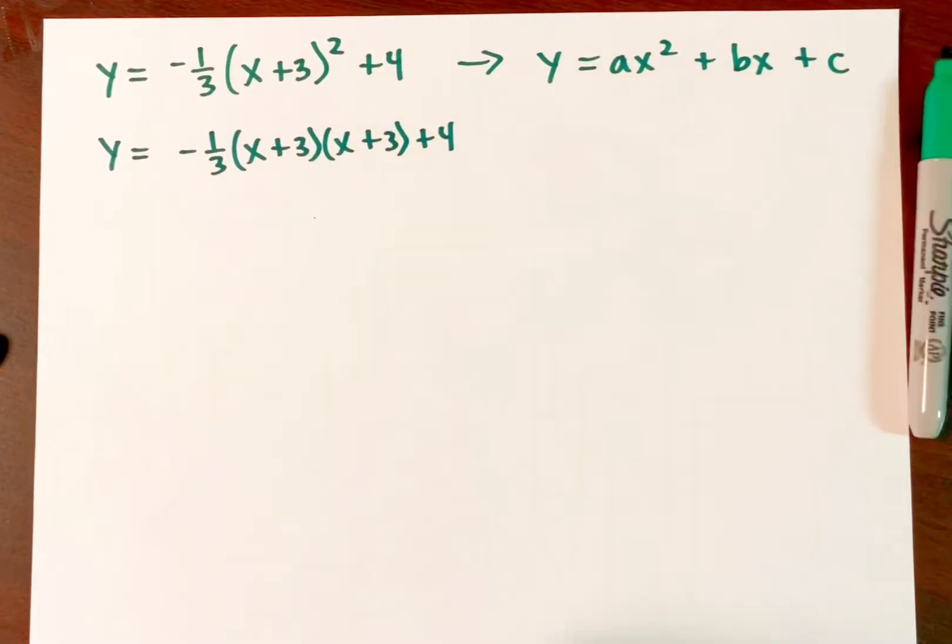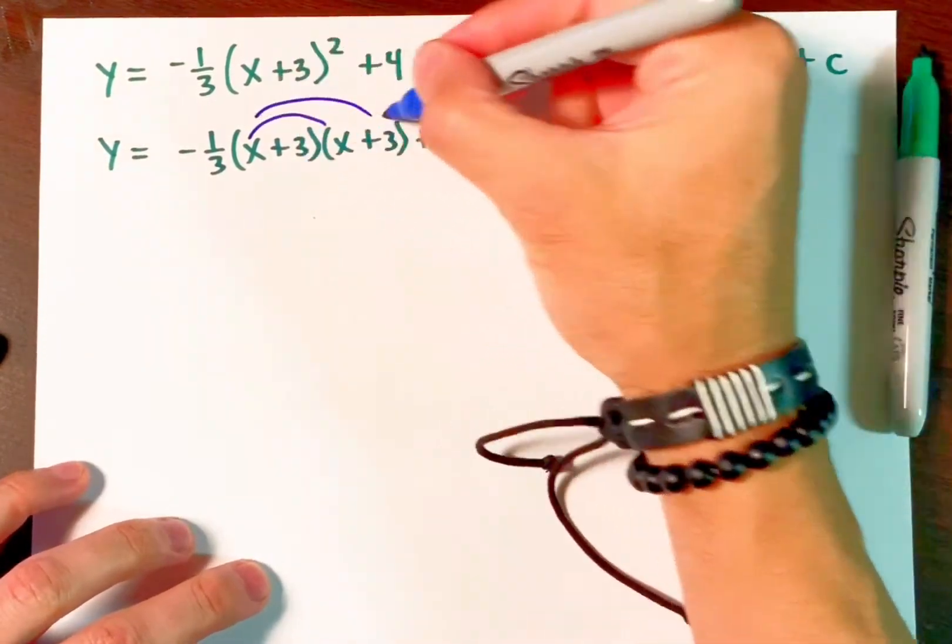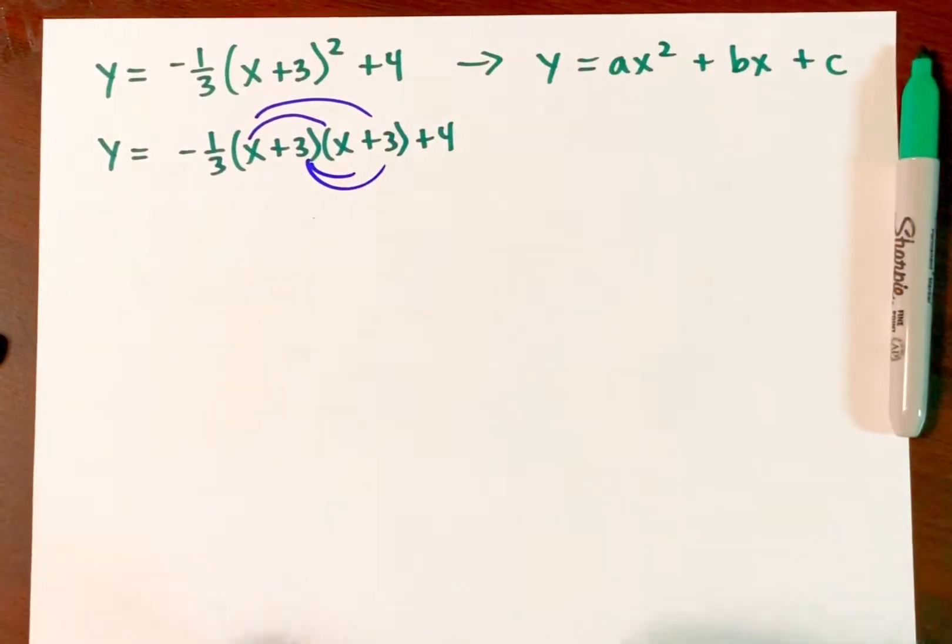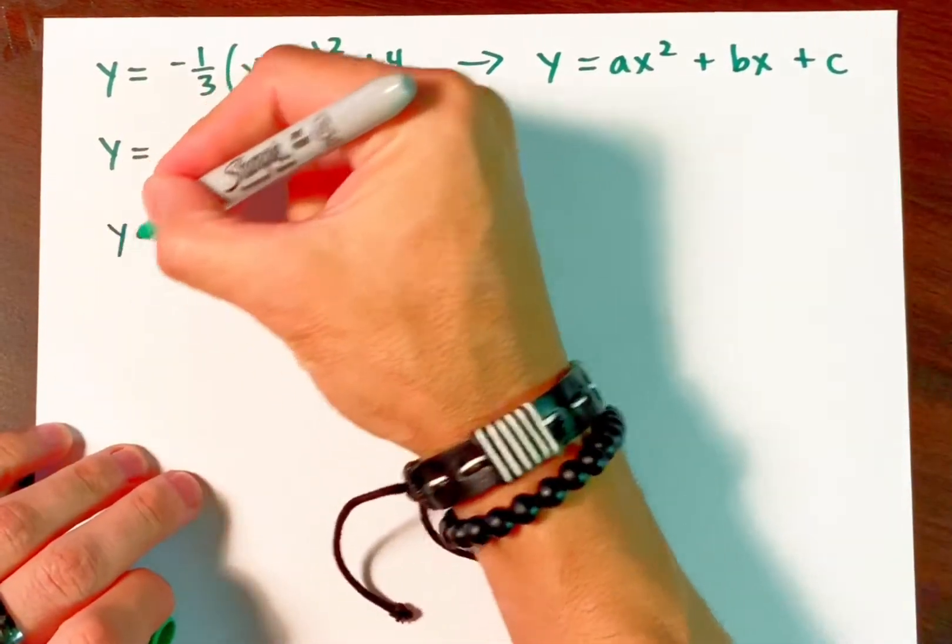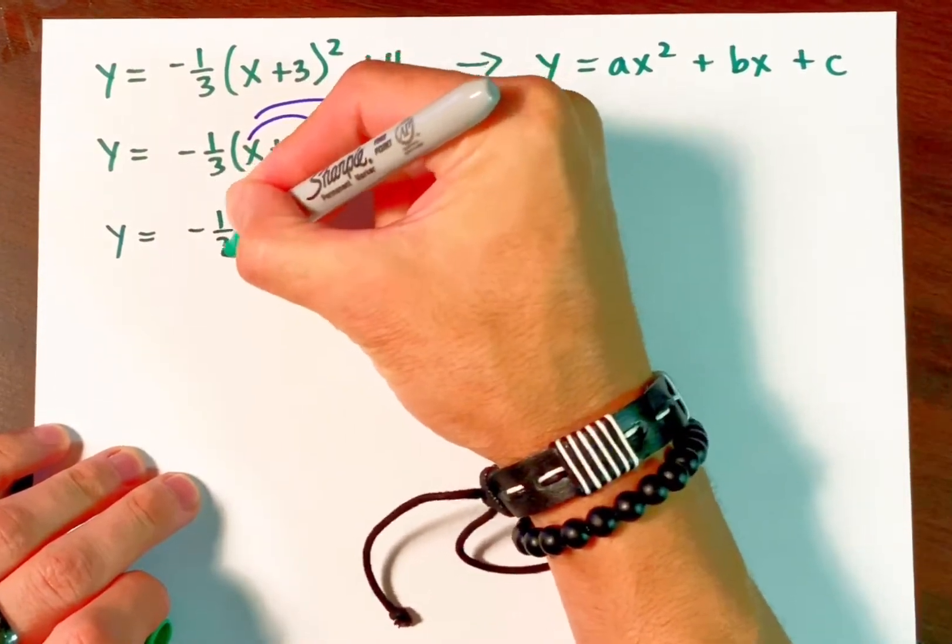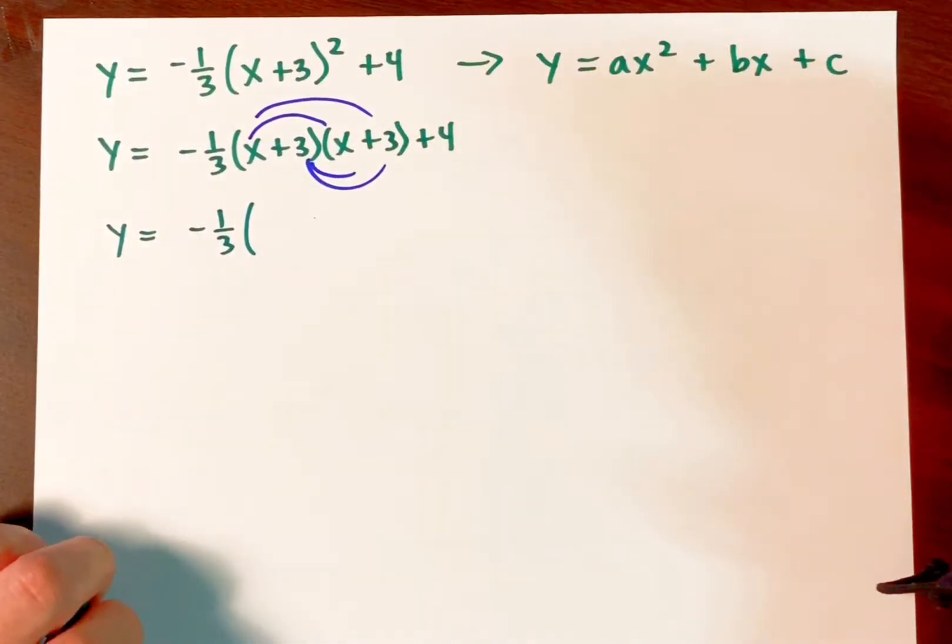Now I can perform a distribution. Sometimes they call it foil. There is no such thing as foil. That language is trash. The proper word is the distributive property.